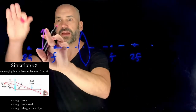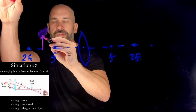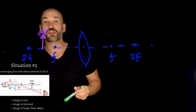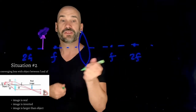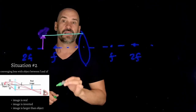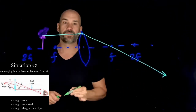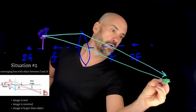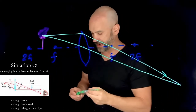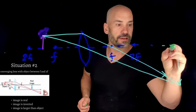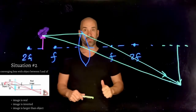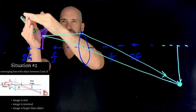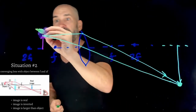Now instead of the object being outside 2f, it's between f and 2f. I'll use just two special rays. First, the ray that goes in parallel and then cuts through the focal length on the other side. Second, the ray straight through the center. We can see an image being formed way over here, and it is inverted.